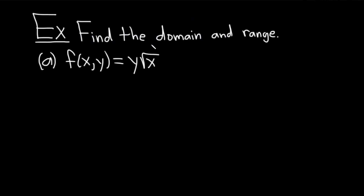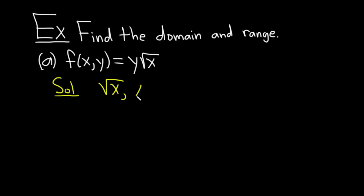Find the domain and range, part a: f of x,y equals y times the square root of x. Start by finding the domain. The domain is basically the set of inputs — everything you can plug in for x and y that makes sense. Y is here by itself and there's no issues; we can plug anything in for y. But we have the square root of x, and whenever you have the square root of x, that means x can't be negative — it has to be greater than or equal to 0. So that's a condition we need to use in our domain.